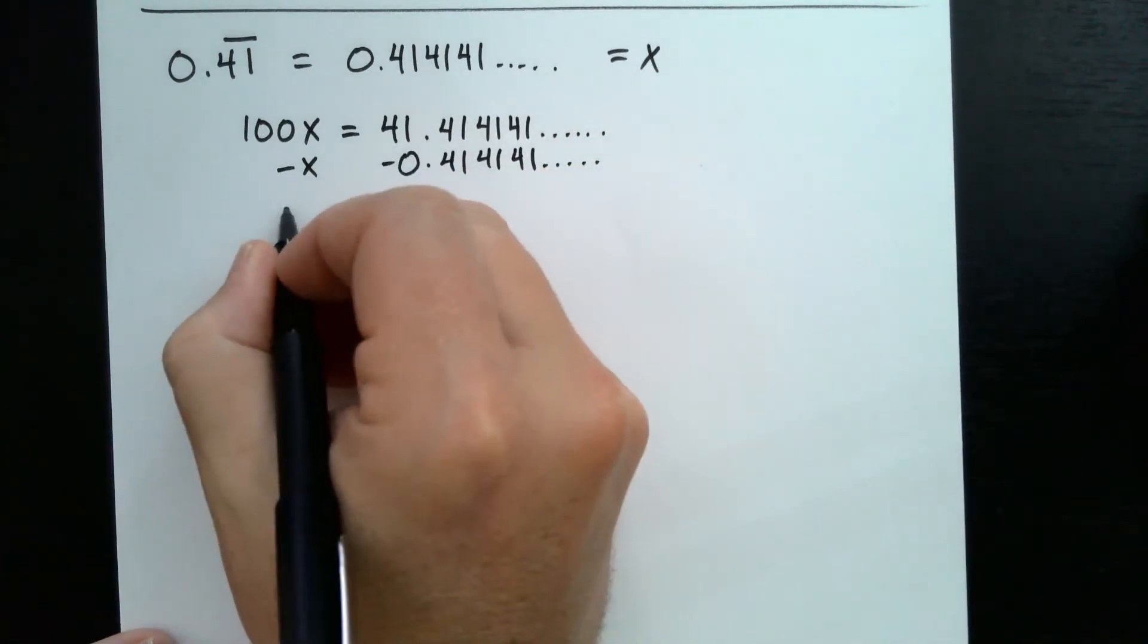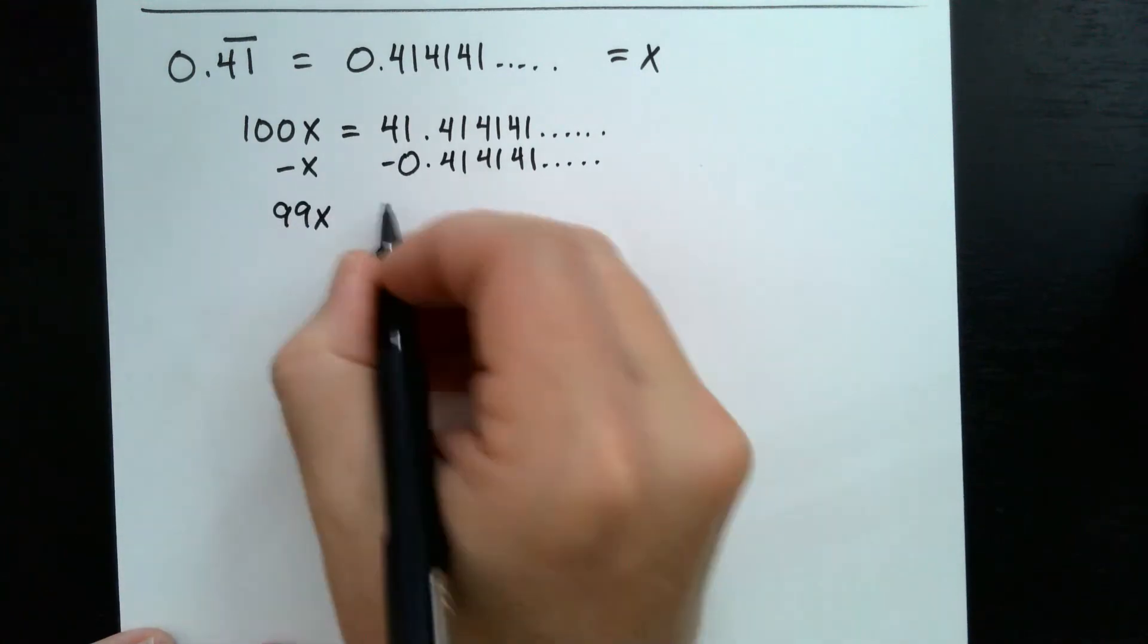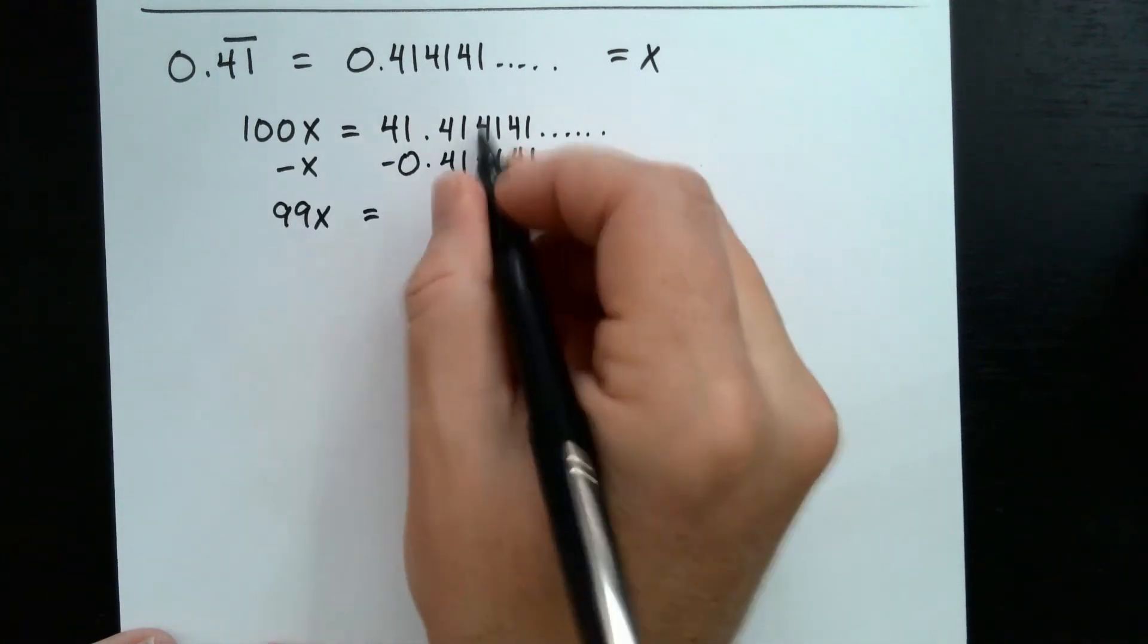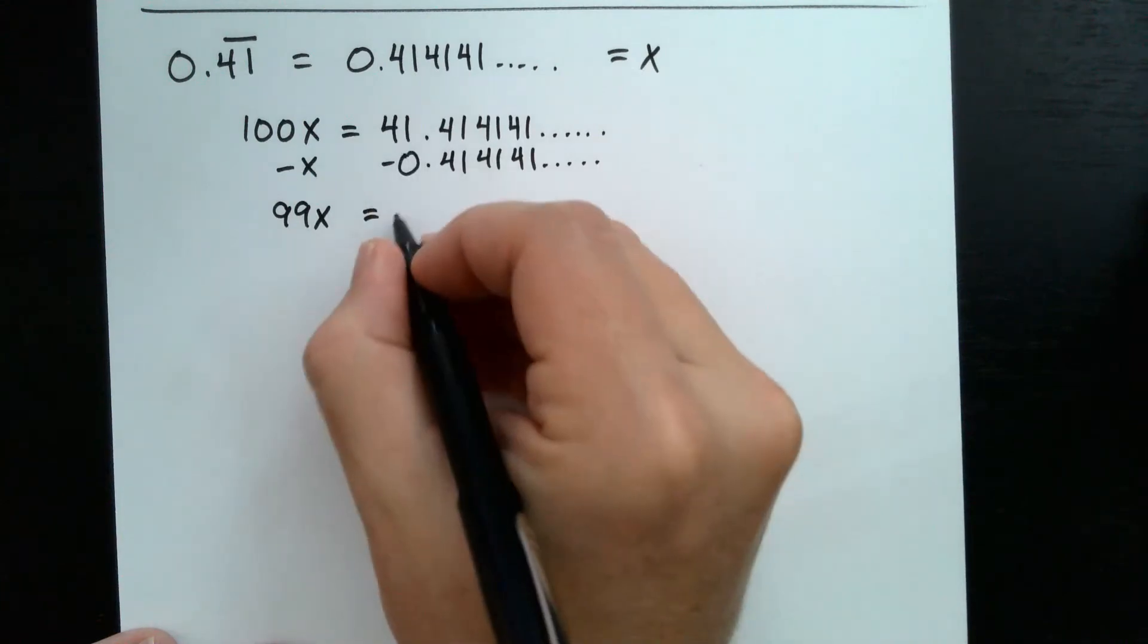That gives us on the left 99x. And on the right, it gives us all this stuff cancels. It's left with just 41.